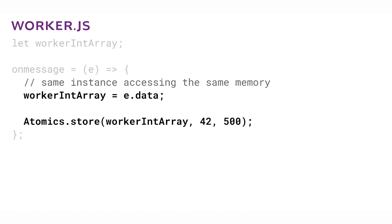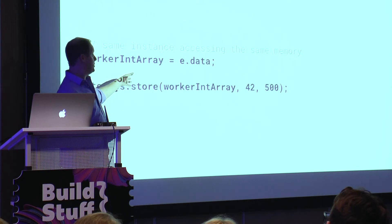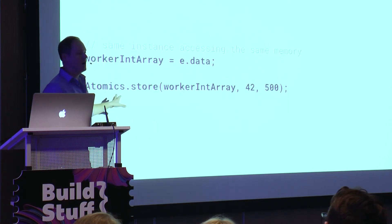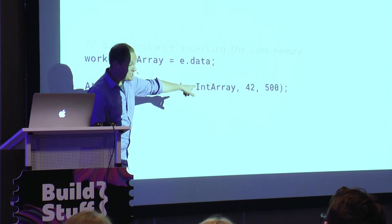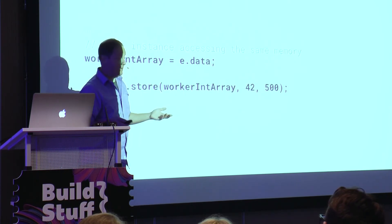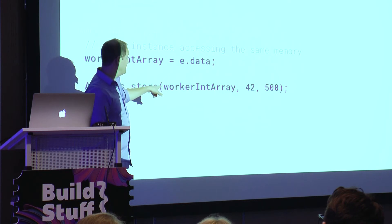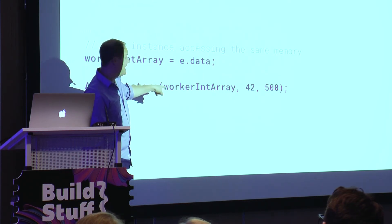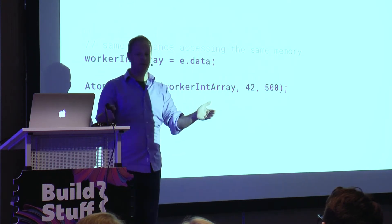I can say Atomics.store on the shared array at index 42, setting the value to 500 — I can directly address that memory. This is a shared allocation seen by the main thread, by the worker, and by any other workers I share it with. It is genuinely a single allocation of memory that can be addressed by multiple threads at the same time. The reason we have to use Atomics is that the Atomics library handles thread safety — something we've never really had to worry about in JavaScript.